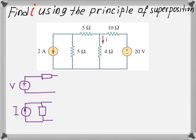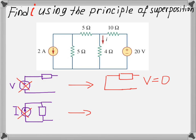There are also a couple of things to keep in mind. When we turn off a voltage source, we remove it and create a short circuit like this, where the voltage is zero. But when we turn off a current source, we create an open circuit — with a resistor in between — and the current becomes zero. We'll be using these ideas when we start solving our example.